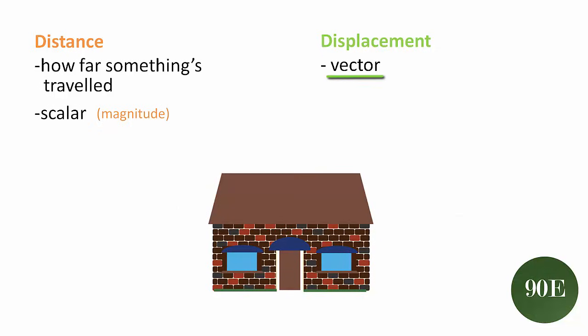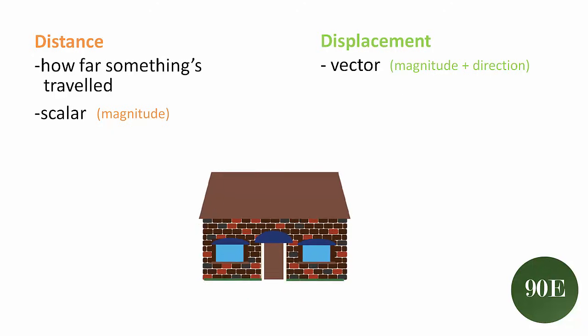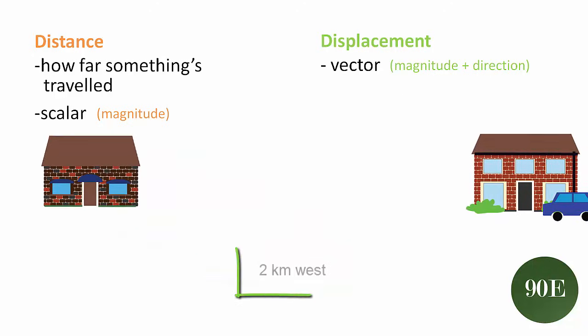Displacement on the other hand is a vector measurement. It tells you not only the distance that the person has traveled but also the direction. So now your friend may say to you that they traveled two kilometers and that they traveled to the west to get to your house.